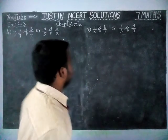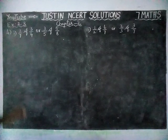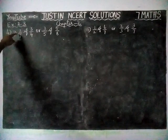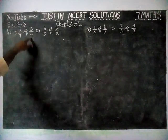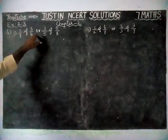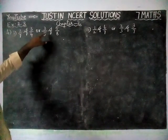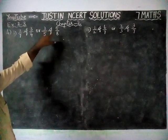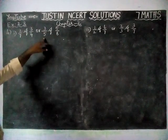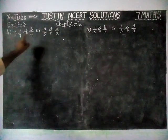Here, they are given 2 points: 2/7 of 3/4, or 3/5 of 5/8. Which one is greater? We have to find.